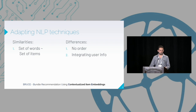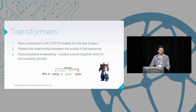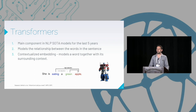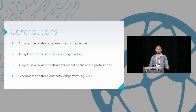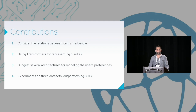To accomplish this, we use transformers — an NLP state-of-the-art component used in recent years, excellent at learning relationships between different words in a sentence. Due to the ability of transformers, we learn the representation of items from their context within the bundle. Our contributions are: considering different relationships between items in a bundle, using transformers for contextual embeddings, suggesting different architectures and aggregation methods, and experimenting over three datasets to improve state-of-the-art.